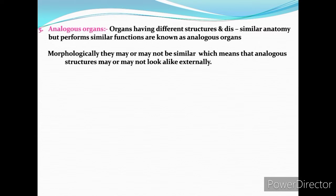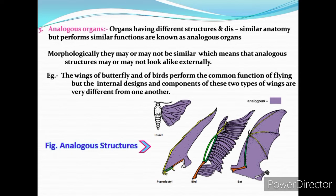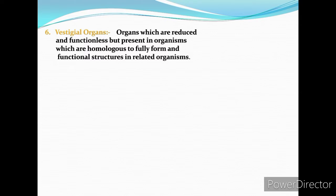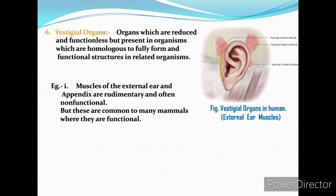Analogous structures are structures in different organisms which are not similar anatomically though they perform similar functions — these are called analogous organs. In the picture, the wings of a butterfly and of birds perform the common function of flying, but the internal designs and components of these two types of wings are very different from one another.